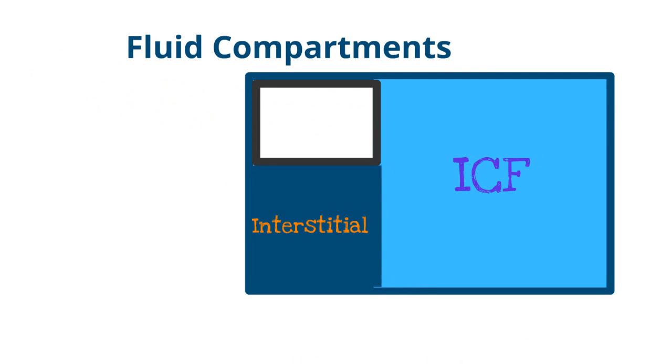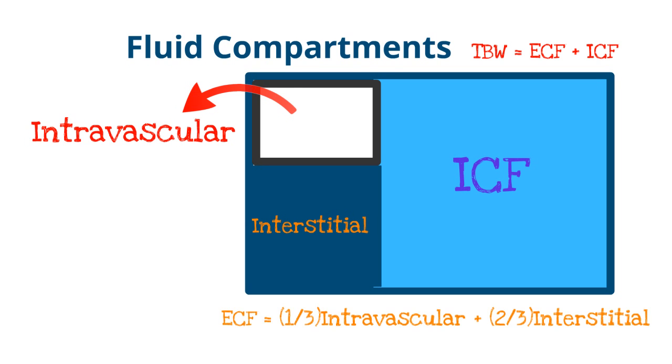To understand the concept of how IV fluids work, you need to understand the different fluid compartments of the body. The fluid compartments consist of an intracellular fluid space and an extracellular fluid space. The extracellular fluid space consists of intravascular volume, so within the blood vessels, and the interstitial fluid, while the intracellular fluid is all the fluid within cells.